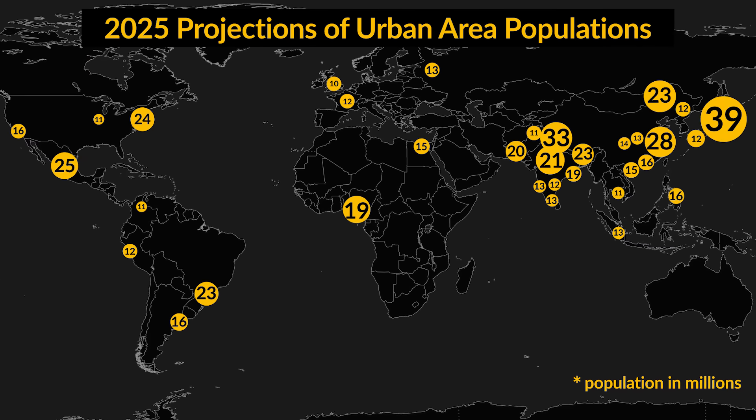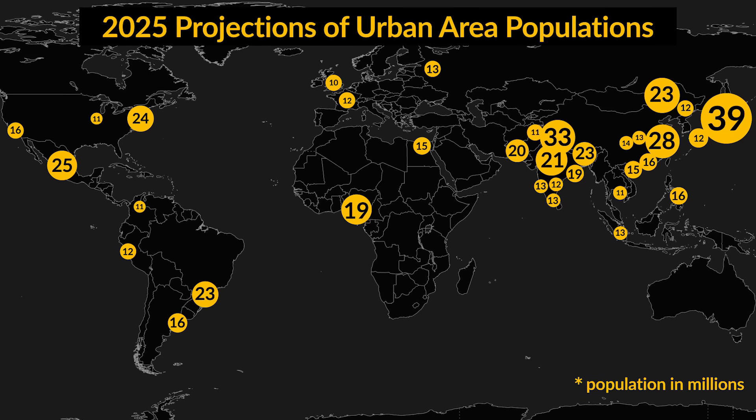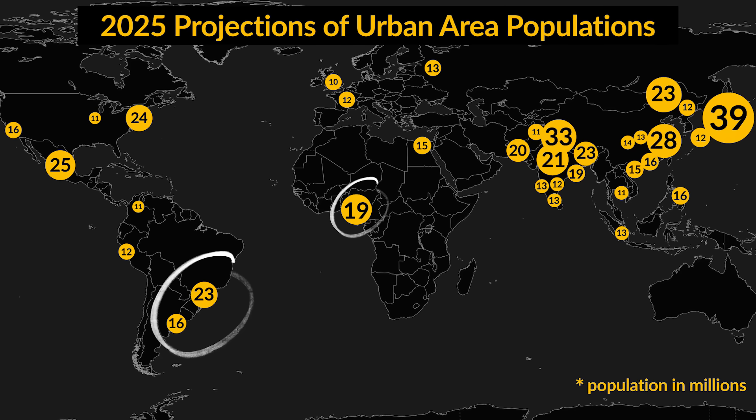Today, we can see that many of the world's most populous megacities are located in core countries. However, this trend is not expected to last. If we look at current projections, many of the world's most populous megacities and metacities are expected to be in periphery and semi-periphery countries. This is due to global migration patterns and differences in birth rates between more economically developed countries and less economically developed areas.